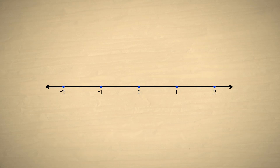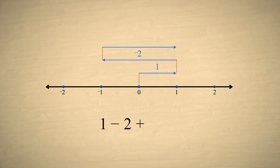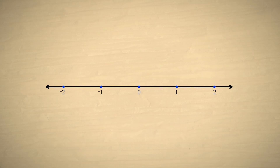Using the number line, we can visualize arithmetic operations with fractions in much the same way we visualize arithmetic operations with integers. Integers are represented as multiples of the unit length. However, to represent fractions, we use multiples of the subdivisions determined by their denominators.